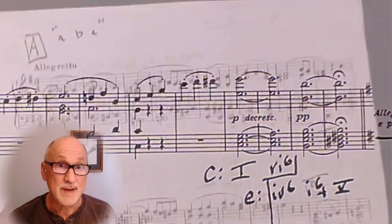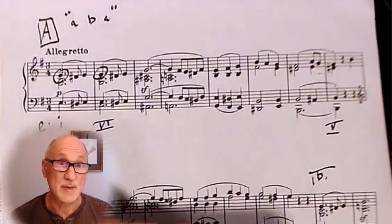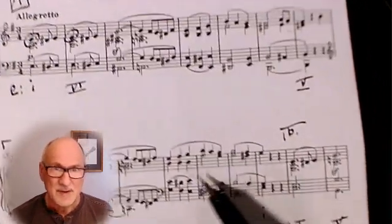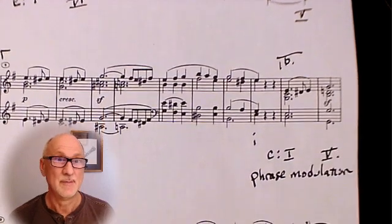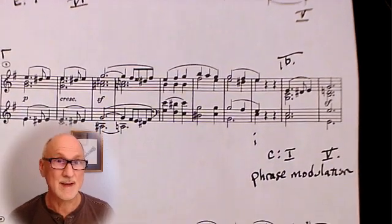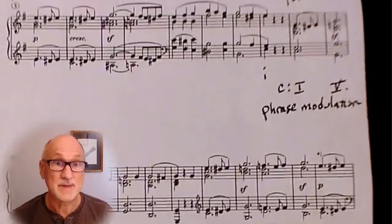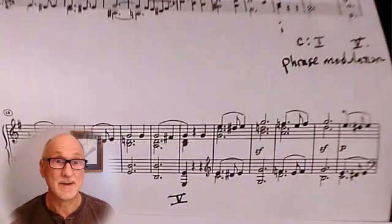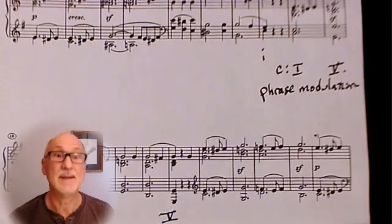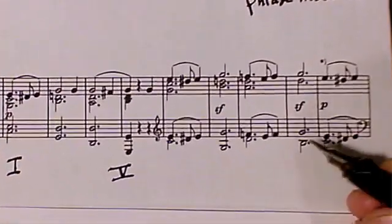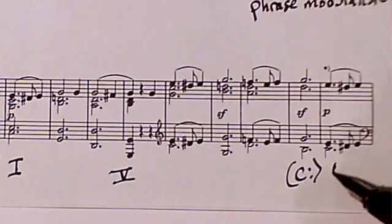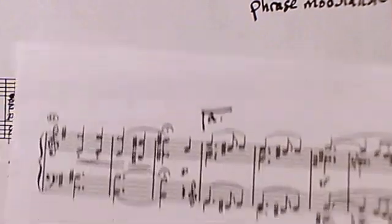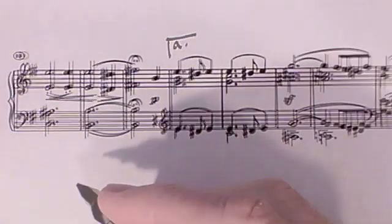Let's go back to the first section and pick up the modulation we skipped earlier. Remember, starting at measure 17, we are in the key of C major. From measures 29 to 32, Beethoven modulates back to E minor. Let's see how he does that. In the key of C major, measure 29, it's the I chord. In measure 30, he enhances the chord by adding an A-sharp — a rather distinctive note.